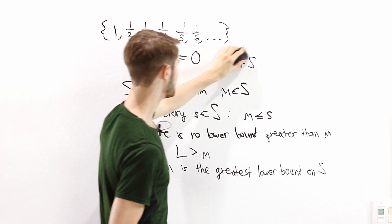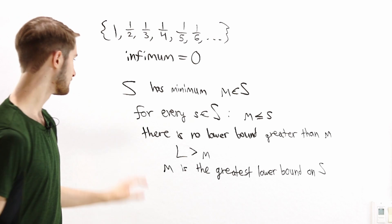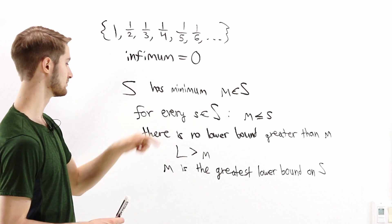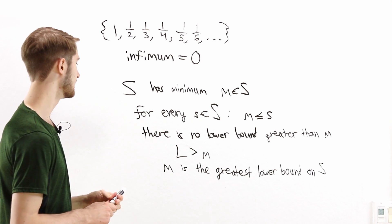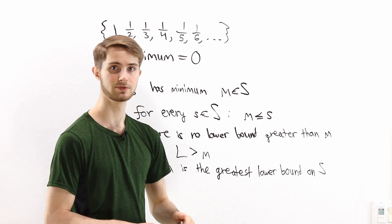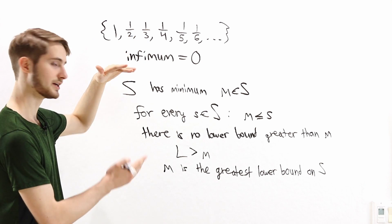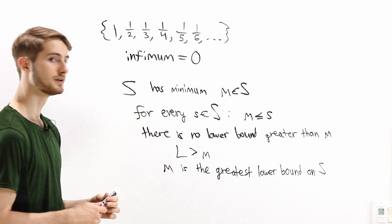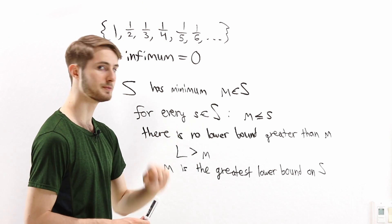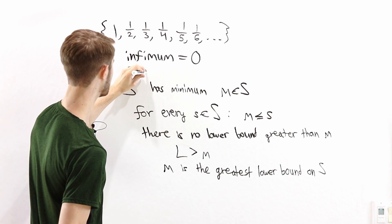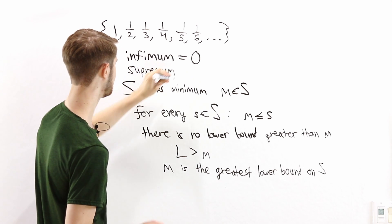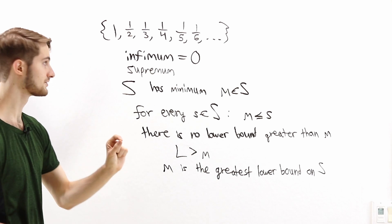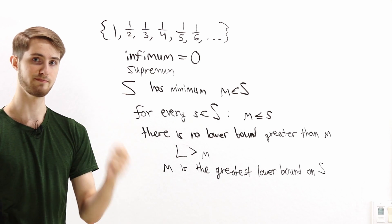We can do a similar thing for maximums, following the exact same reasoning. But if we're looking at a maximum instead of a minimum, then what we get is the least upper bound — the same idea, except we're coming from above instead of from below. If we look at the least upper bound on a set, that's called the supremum of the set. So supremum is a generalization of max, and infimum is a generalization of min.